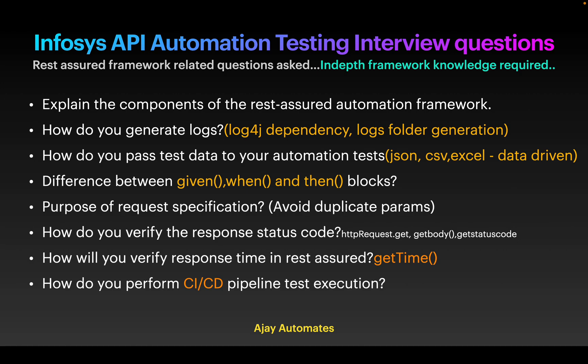Then there were questions on the difference between Given, When, and Then, and what is the purpose of RequestSpecification — to avoid duplicate parameters we use RequestSpecification. There was also a question on how do you verify the response status code and how do you perform CI/CD pipeline test execution, so you have to explain your whole automation test process.